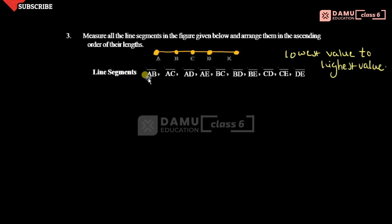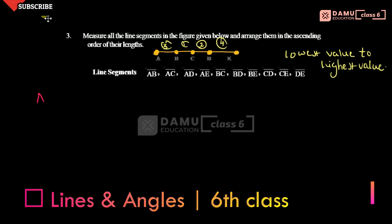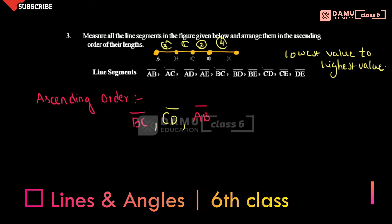From lowest value to highest value. Here, the first smallest one is BC, then CD, then AB, then DE. These are the smaller values. In ascending order, we will start with DE.